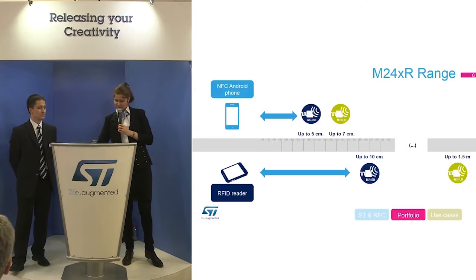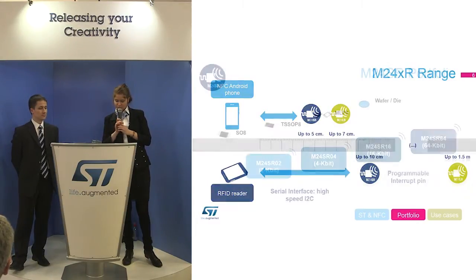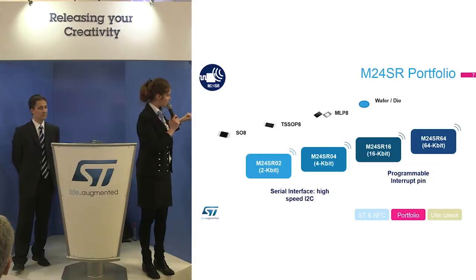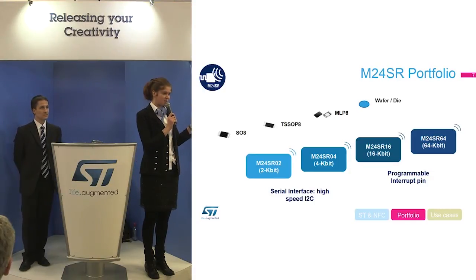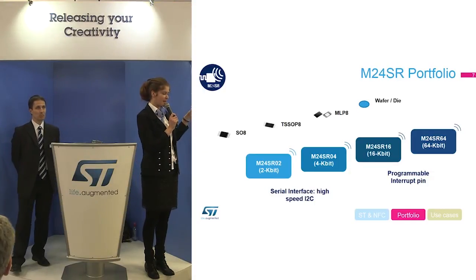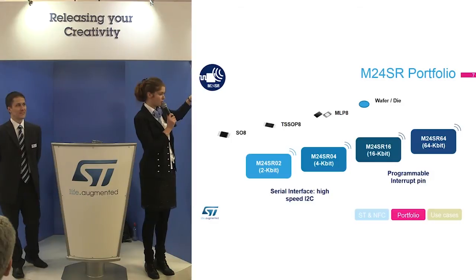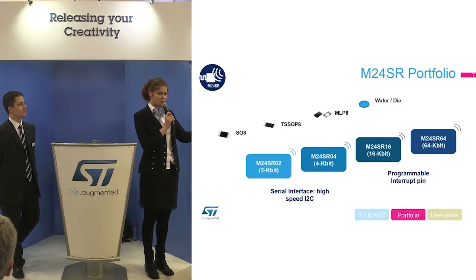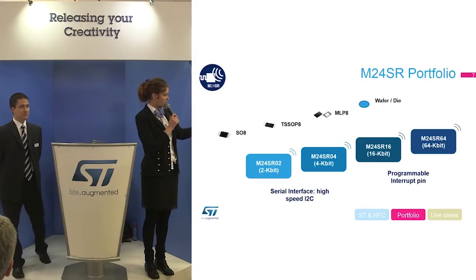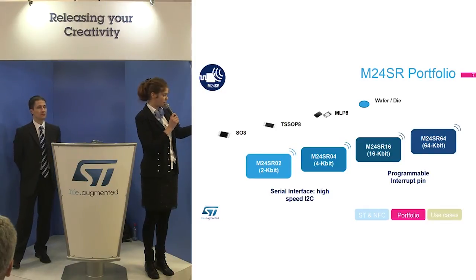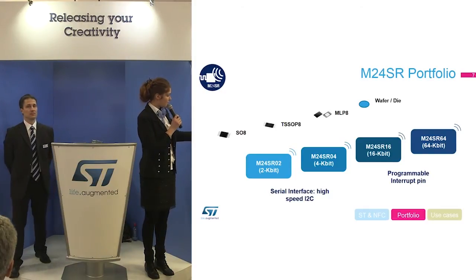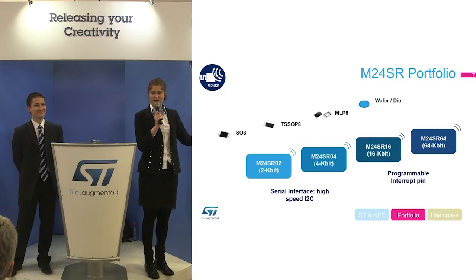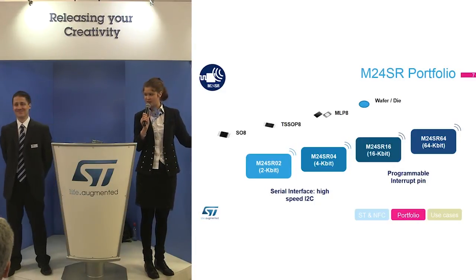Let's look at the M24SR portfolio. We have four different package types: CSSOP, MLP, SO8, and wafer. There are four different memory sizes: 2, 4, 16, and 64 kilobits. A notable feature is the high-speed I²C interface at 1 MHz.